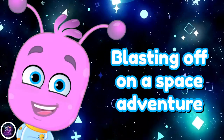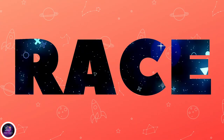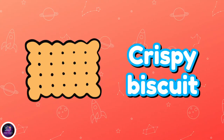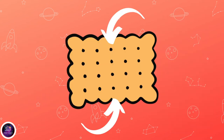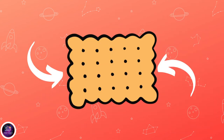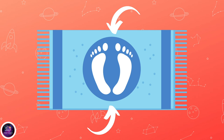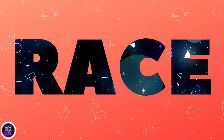Blasting off on a space adventure — shape space race! Some shapes are really short and fat, like a crispy biscuit or your bathroom mat. But which sides are the longest? These sides are double the length of these sides, and these sides are half the height of these sides.